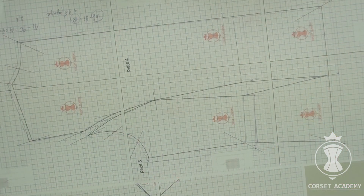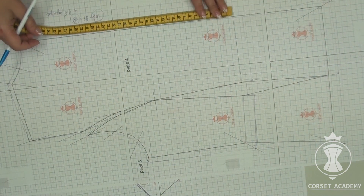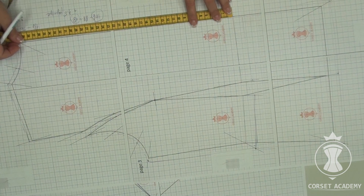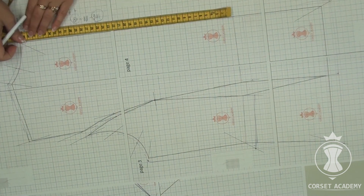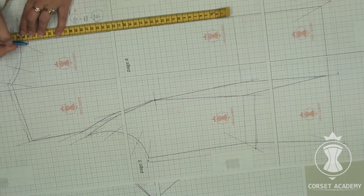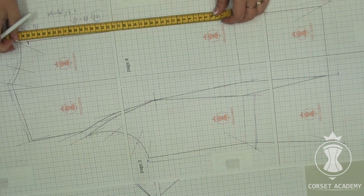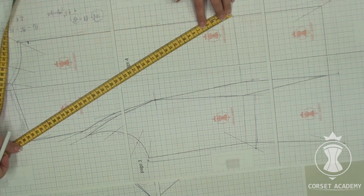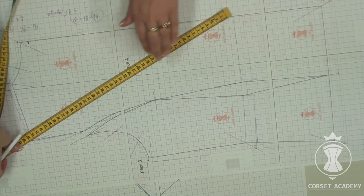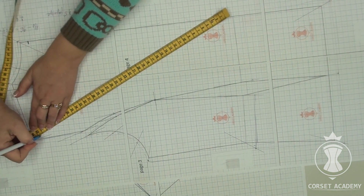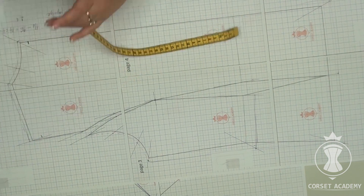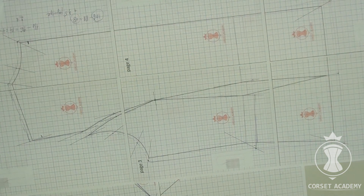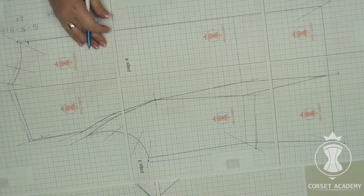Let us go to the jacket back pattern. I put the client's measurements on the pattern of the back. Nape to waist — 38 centimeters, point C, which is 1.5 centimeters less than it is on the pattern. And the shoulder slope back — 43 centimeters, point D, which is also 1.5 centimeters less than it is on the pattern.